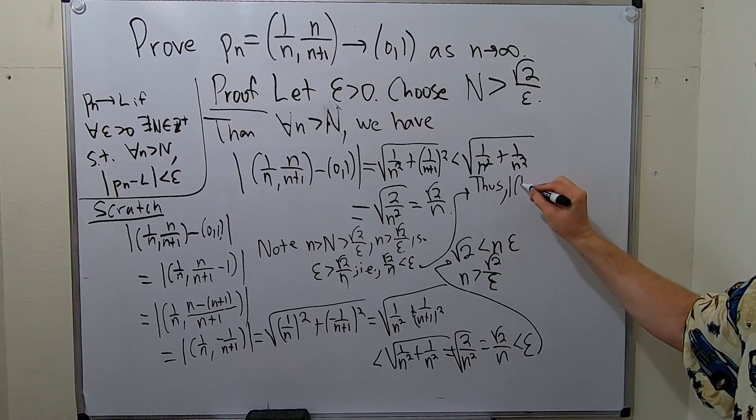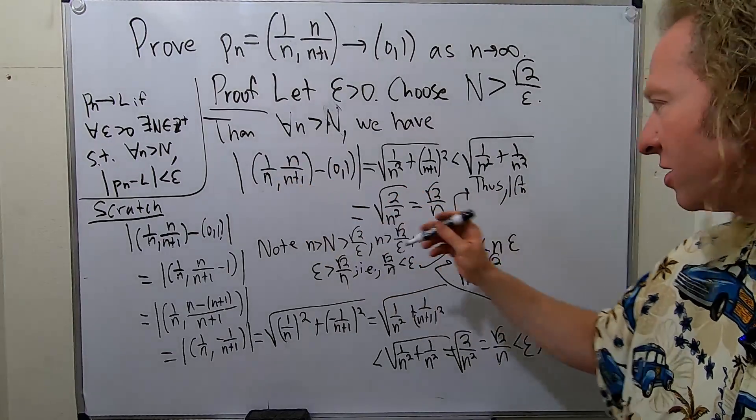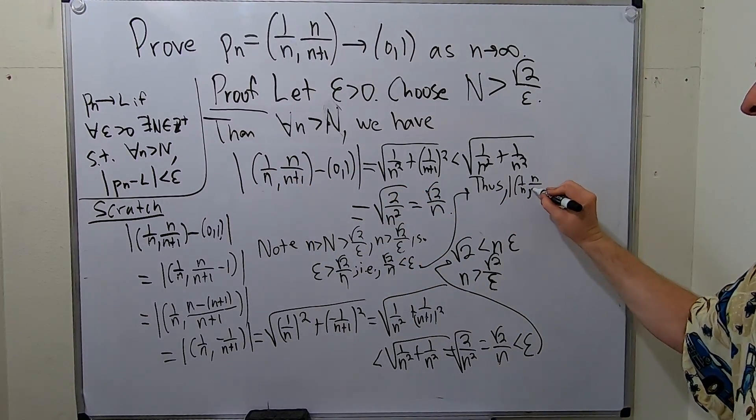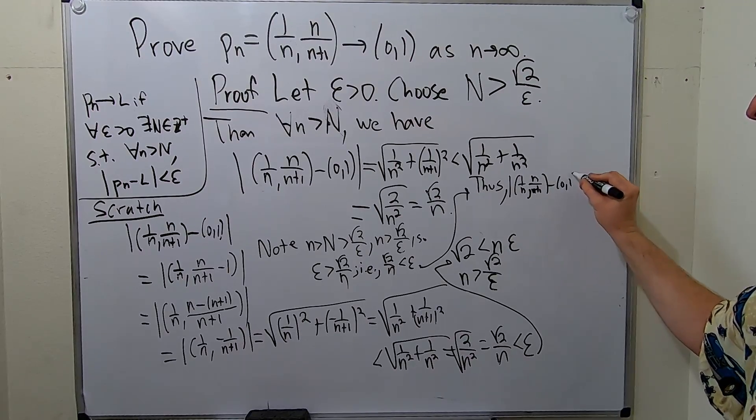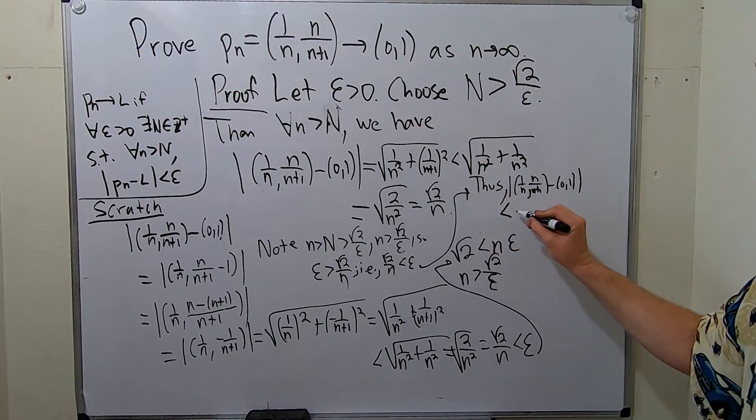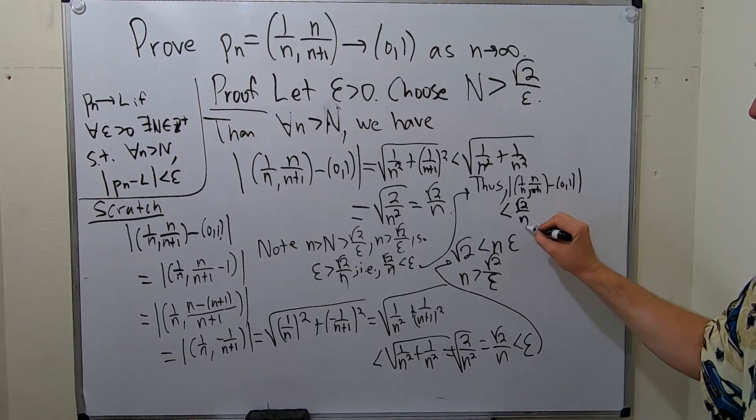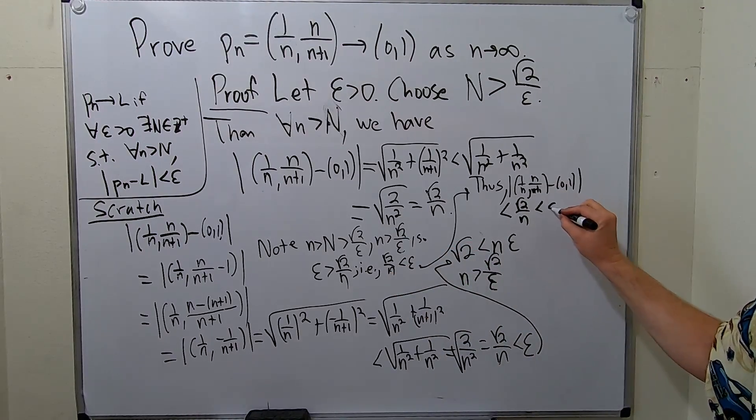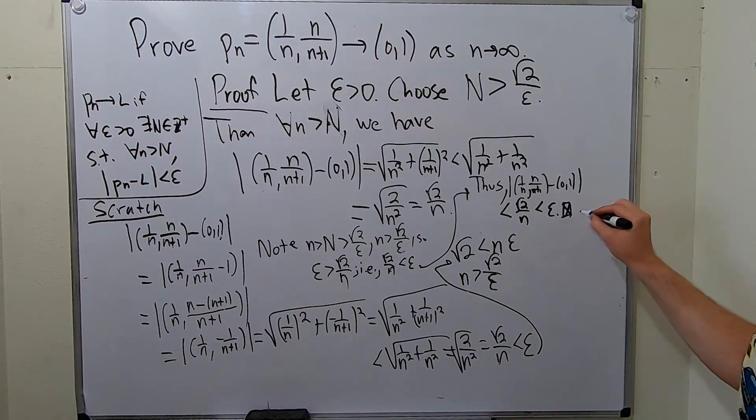Going back to our proof thus, magnitude (1/n, n/(n+1)) minus (0,1), rewriting it here again just for clarity. Clarity is really important. Math is really hard and it's important to be as clear as possible. This is less than square root of 2 over n and we explain why that's less than epsilon and that completes our proof my friends.